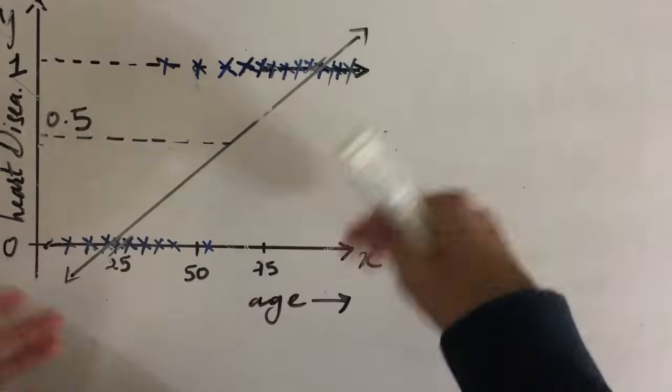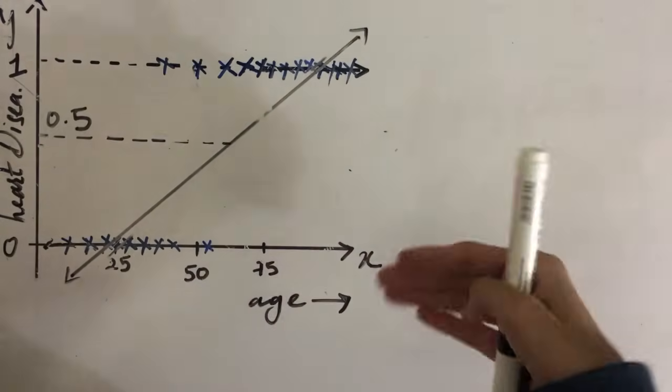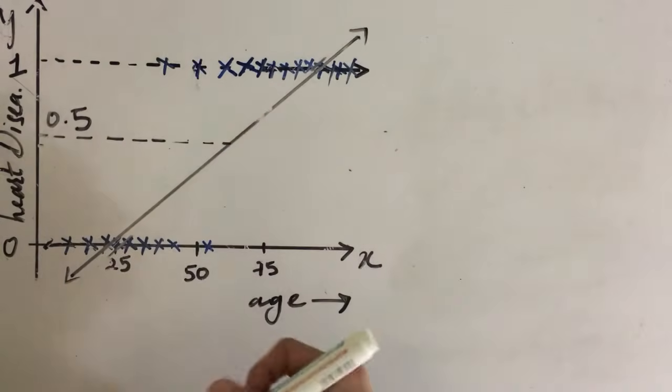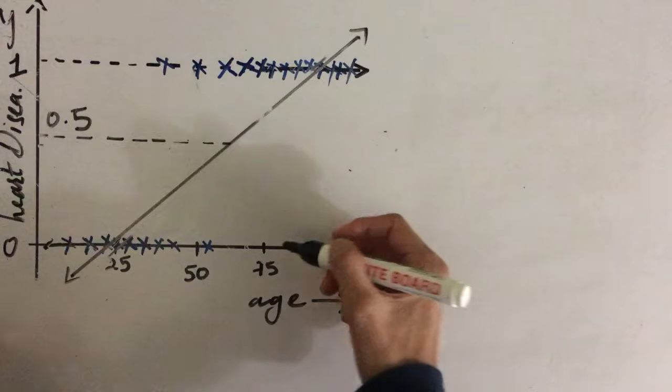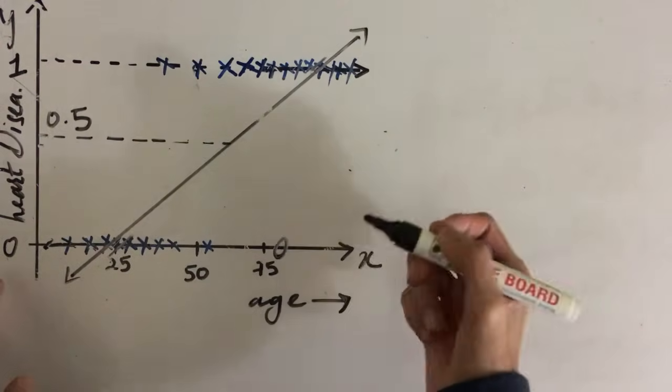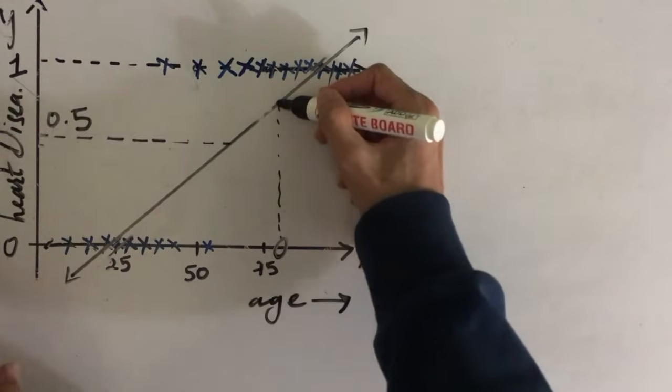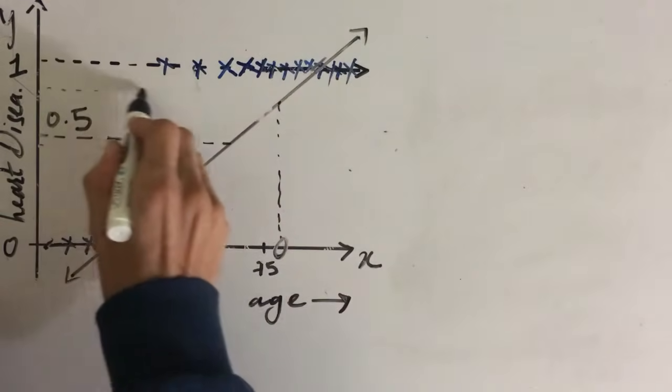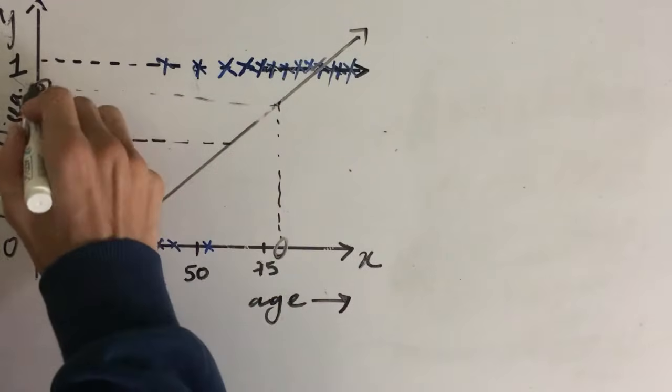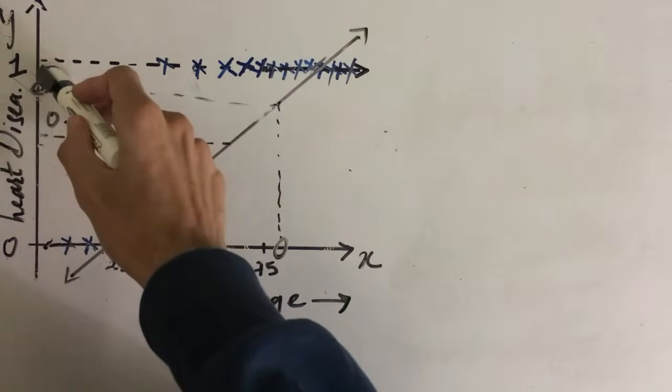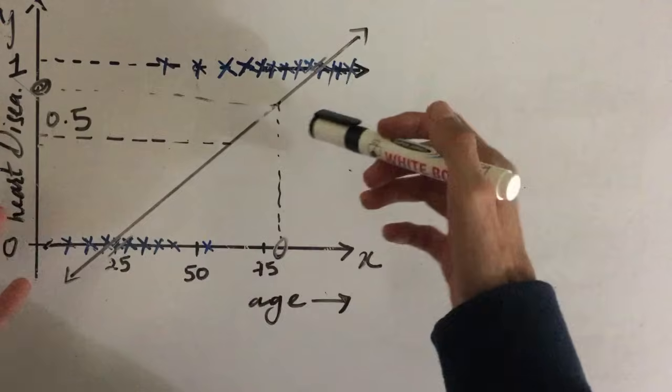Now based on this straight line, what we can do is we can predict if the person is having heart disease or not for a new input feature. For let's say if we want to find if the person having this age has a heart disease or not, then what we can do is we can go to this line and see what is the value of this. So this value will serve as the probability for us.